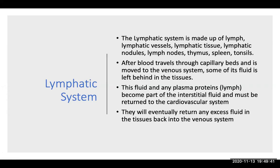Hi anatomy students and welcome to the lymphatic system. This will be on chapter 24. The lymphatic system is sometimes known as your immune system, even though that's not really what it should be called, but it does have things about the immune system involved in it. Your lymphatic system is made up of all your lymph, the lymphatic vessels, lymphatic tissue, lymphatic nodules, lymph nodes, the thymus, the spleen, and the tonsils.